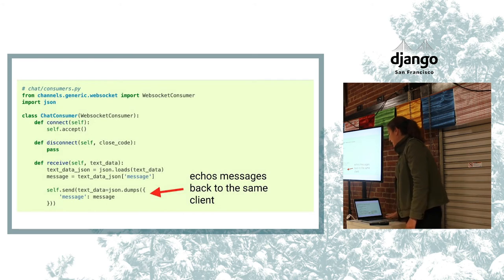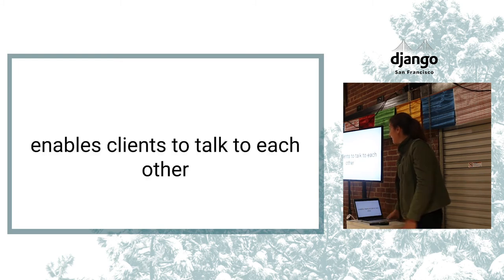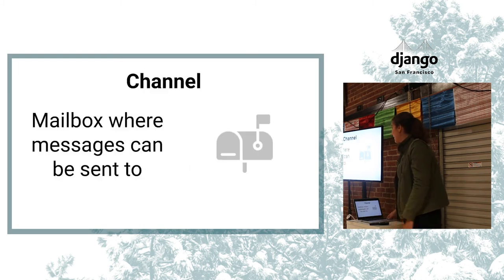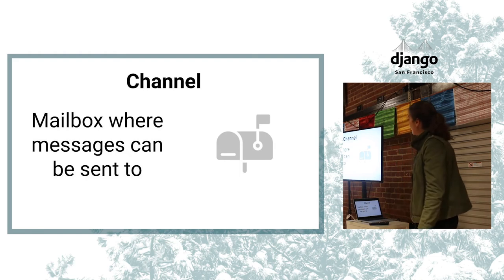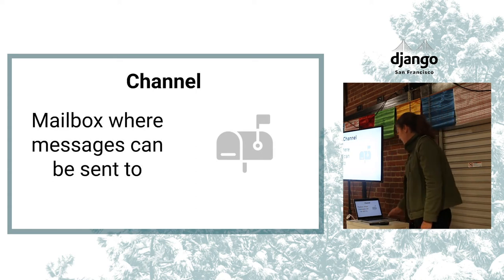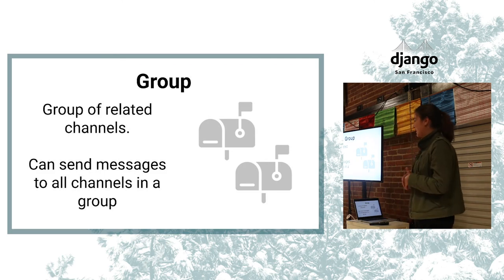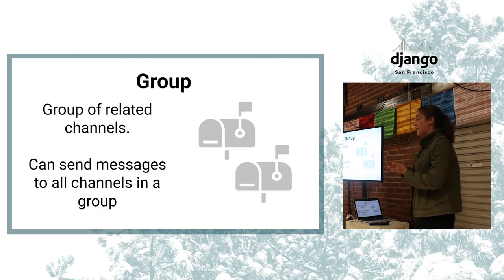That code works if you're just in one browser window by yourself, but the point is collaborating live with someone else. To do that, we need the channels layer — basically a Redis layer that enables clients to talk to each other. A channel is a mailbox where messages can be sent, corresponding to someone in the browser. A group is a group of channels — if you want to send messages to a group of clients at the same time, you use the group interface.